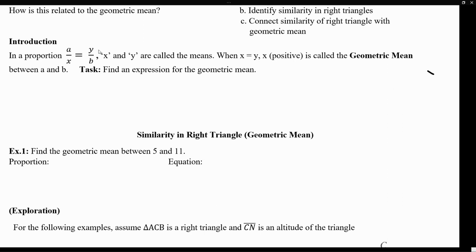Since we're going to be discussing the geometric mean, first we have to define what a geometric mean is. The geometric mean comes from a proportion. So here we have two fractions, or just two ratios, which are equal to each other. When we set up ratios equal to each other, we can say that the denominator of one and the numerator of the other can be called the means of those proportions.